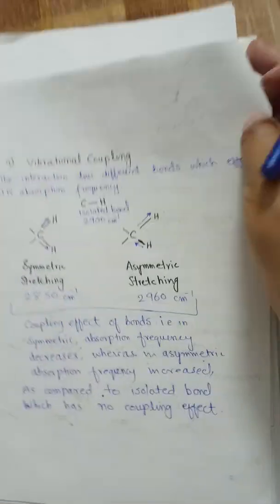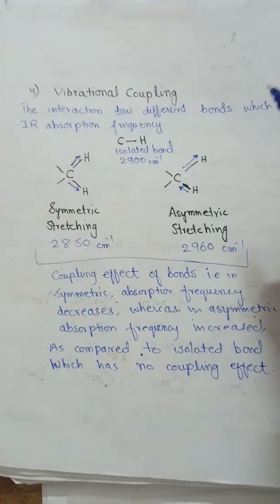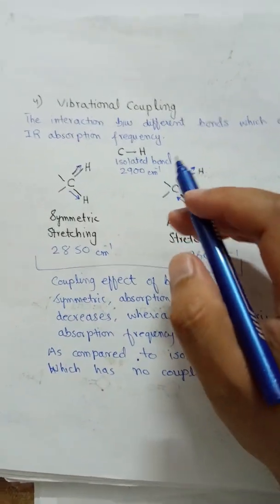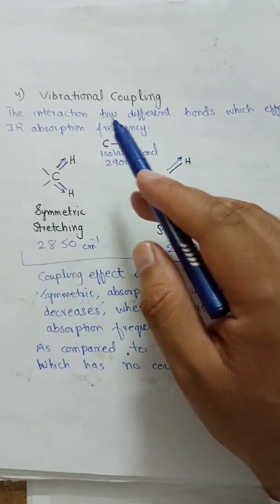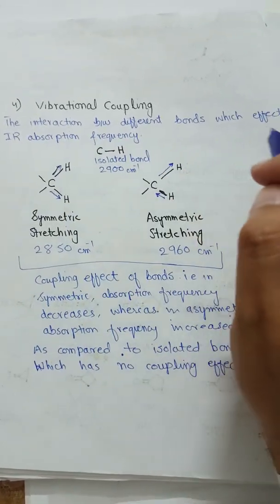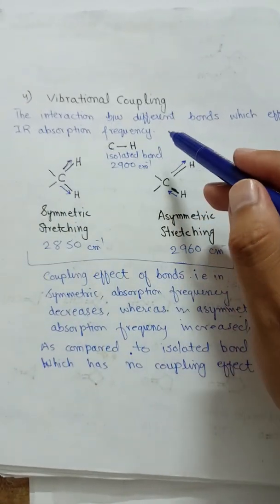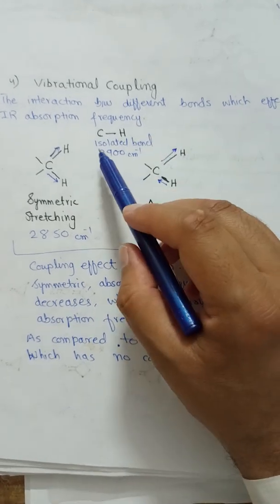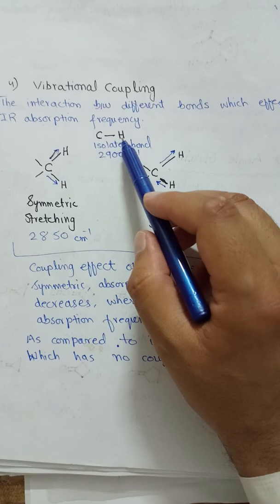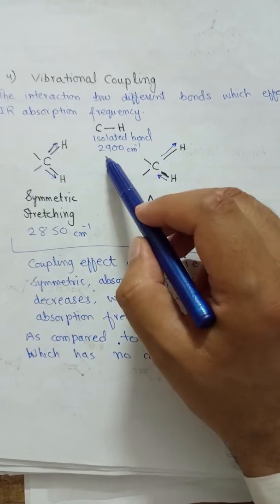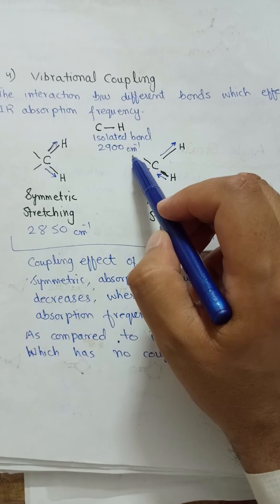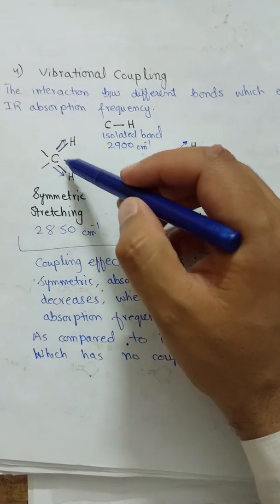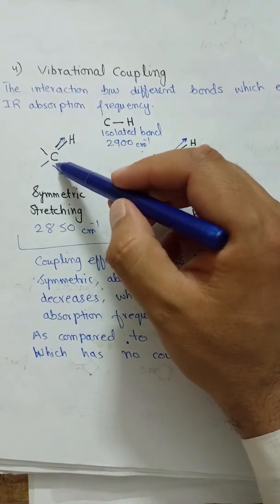The last factor is vibrational coupling. Although less important, it also affects the absorption frequency. It is the mechanical interaction between different bonds that affects the IR absorption frequency. For example, in C-H stretching, an isolated C-H bond absorbs at 2900 cm⁻¹. But if this C-H stretching is affected by an adjacent C-H stretching sharing a common carbon, the stretching becomes coupled.